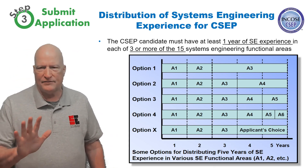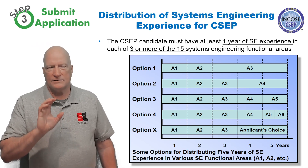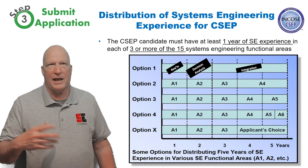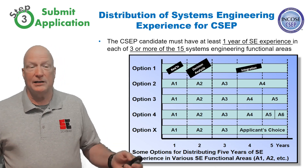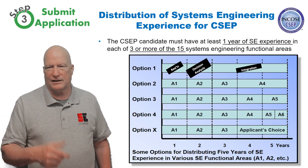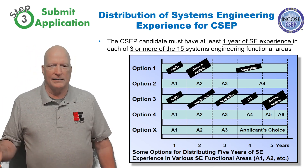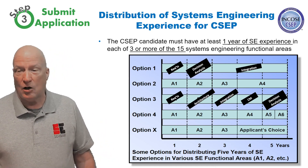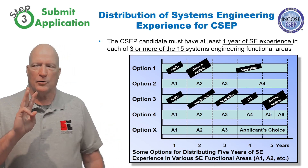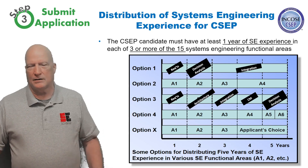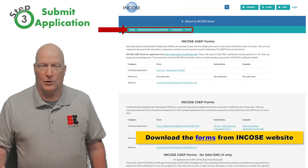Remember, you're looking for five years of experience, but you need at least one year of system engineering experience in three or more of those functional areas. For example, you could have a year in requirements, a year in decision analysis, and three years in integration — that would meet their criteria. Or you could have a year in requirements, a year in architecture, a year in integration, a year in CM, and a year in decision making. As long as you have one year of experience for three of those areas, you can split up the others. To get started, go to the ENCOSI website and download the CSEP certification application and instructions.